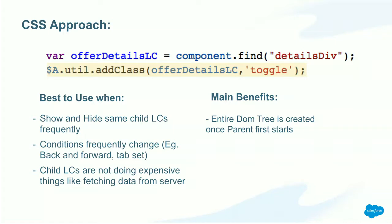The CSS approach is best when you need to show and hide the same child Lightning components frequently and the conditions change frequently. In our SPA we have Next and Back buttons, so we know the user needs to load those child Lightning components at least once and can go back and forth. Since we didn't have many child components and they weren't doing expensive server calls, it made sense to load them all at once in the parent's markup and toggle visibility using $A.util.addClass. The main benefit is that you load everything into the DOM tree once and the SPA becomes very fast after that.